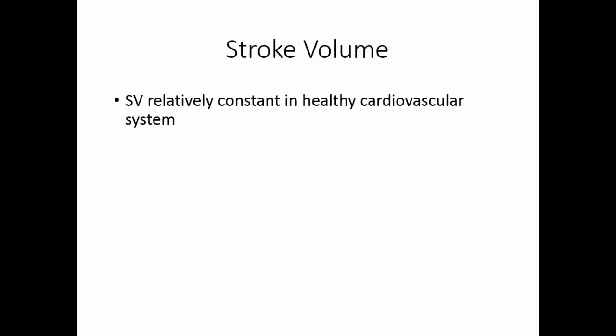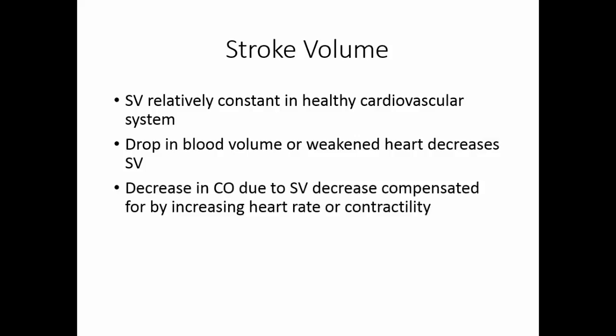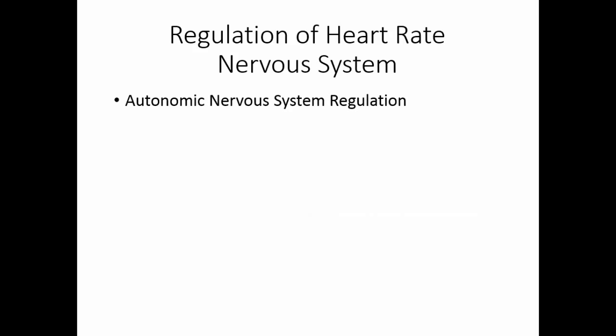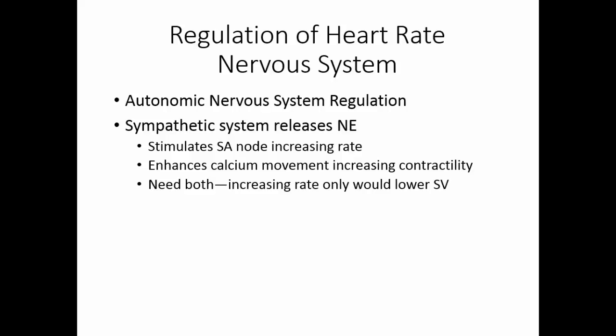Stroke volume is relatively constant in a healthy cardiovascular system. A drop in blood volume or a weakened heart muscle both contribute to decreased stroke volume. When cardiac output decreases because stroke volume decreases, the body compensates by increasing heart rate and/or heart contractility. Heart rate is regulated by the autonomic nervous system. The sympathetic nervous system releases norepinephrine, which stimulates the SA node to increase its rate and enhances calcium movement into the cells, making the contraction more forceful. By doing both, we get a rapid and forceful heartbeat that moves more blood and increases stroke volume.